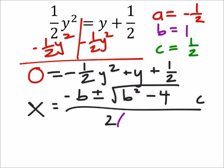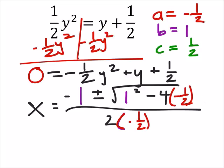I'm going to replace the a values with a negative one-half, I'm going to replace the b values with one, that's pretty easy value to work with, and then the c value with one-half.